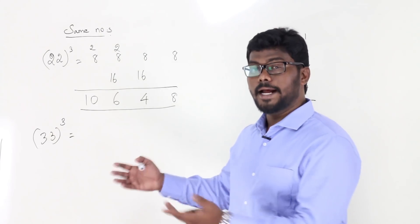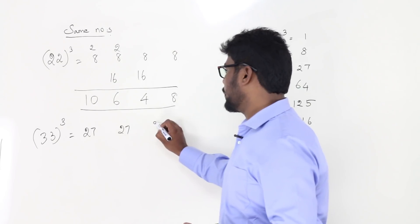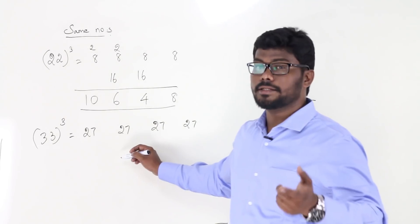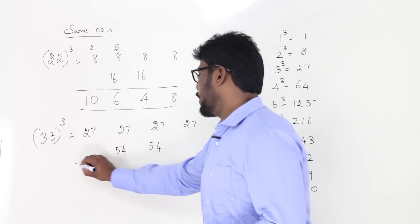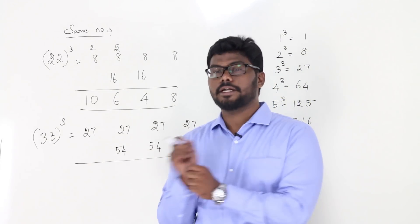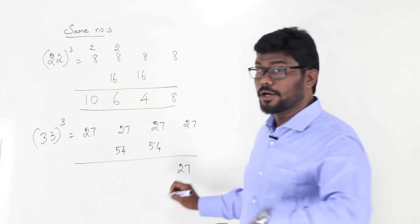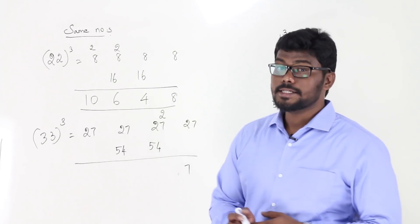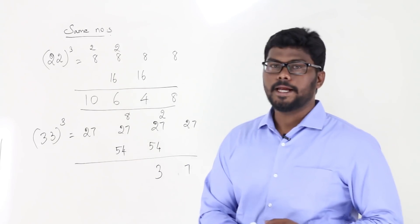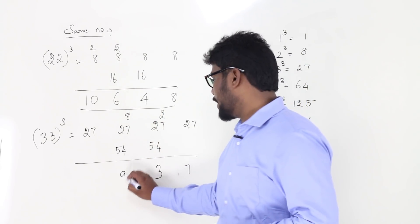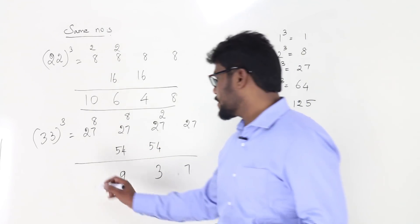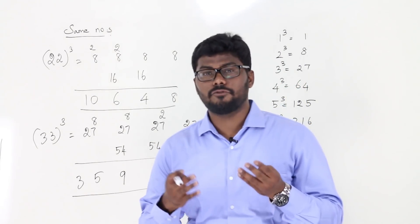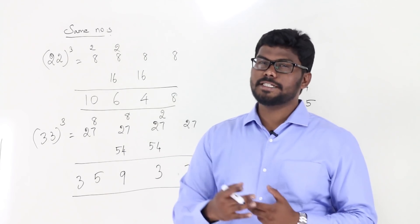Another Type 3 example: 33 cube. Cube 3: that's 27. Write it four times: 27, 27, 27, 27. Ignore first and last, double the middle digits: 54 and 54. Now add carefully: write 7, carry 2; 27 plus 54 is 81, plus 2 is 83 — write 3, carry 8; 81 plus 8 is 89 — write 9, carry 8; 27 plus 8 is 35. The answer is 35937.